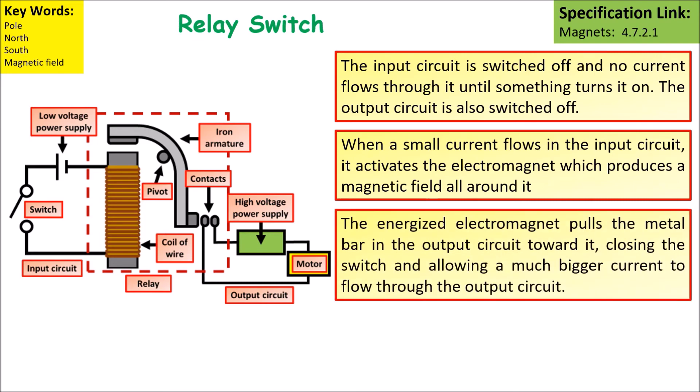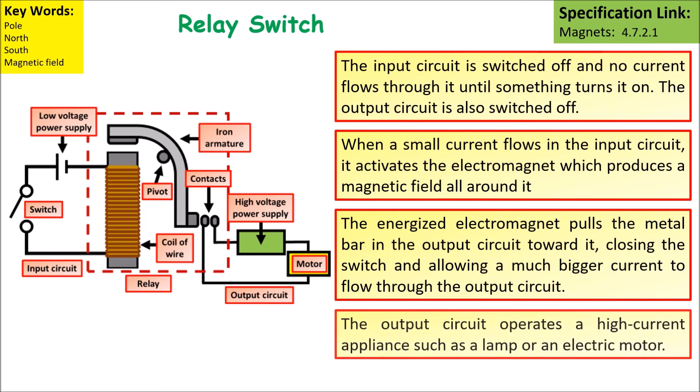The energized electromagnet pulls the metal bar in the output circuit towards it, closing the switch and allowing a much bigger current to flow through the output circuit. The output circuit operates a high current appliance such as a lamp or an electric motor.